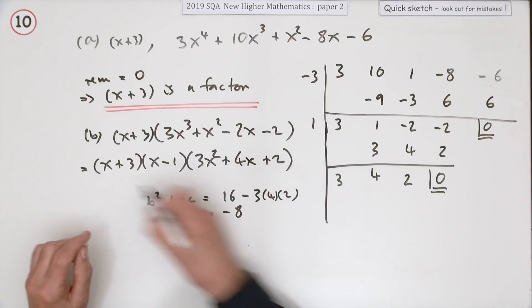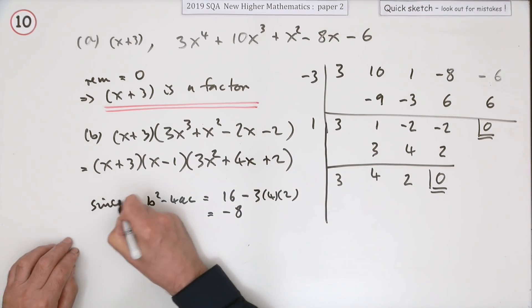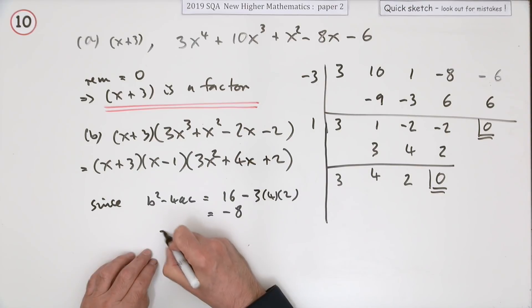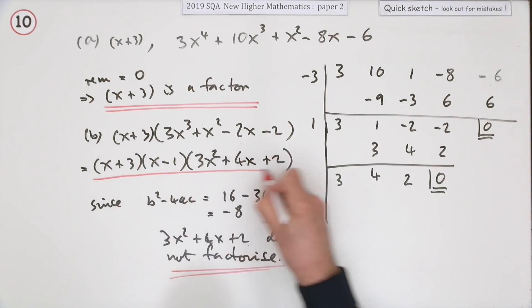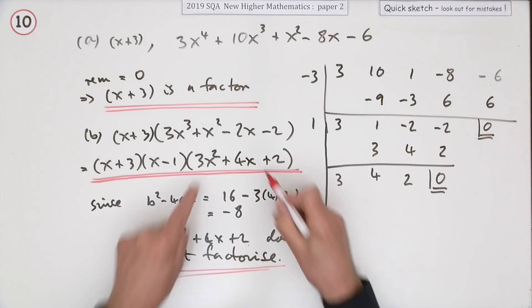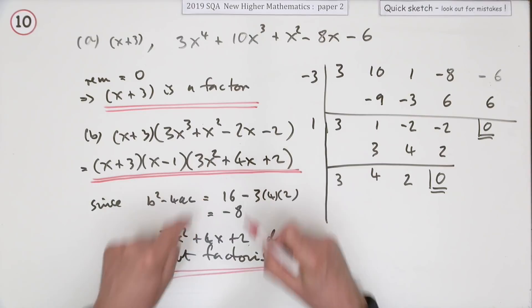So I don't need to write these because I'm just going to finish there. I'll put: since 3x²+4x+2 does not factorize, I hope they can read that—so that's why I'm stopping here. That's it fully factorized because that can't be factorized any further.